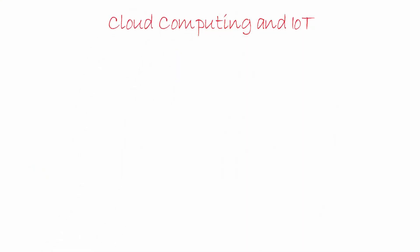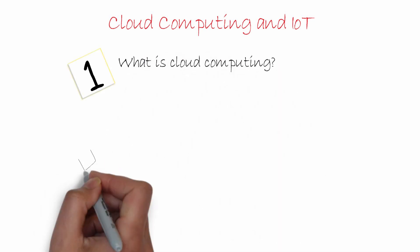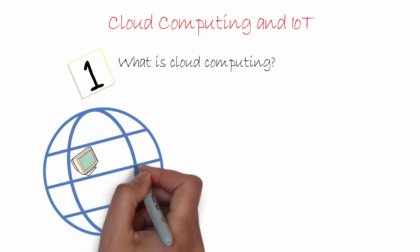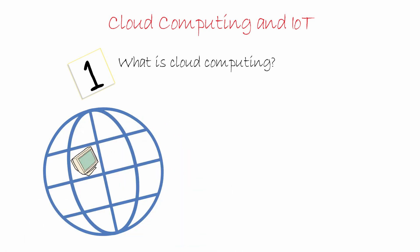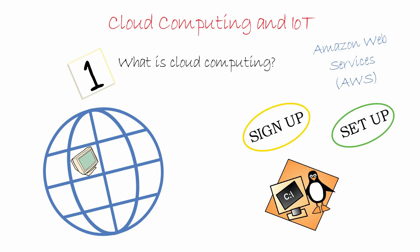Cloud is another term that is commonly used to refer to the internet. Cloud computing means using a computer located in some corner of the planet to do your processing tasks. A famous example of cloud computing is Amazon Web Services, short for AWS. You can sign up and set up your own Linux system on one of their servers and use it — all you need is a browser.